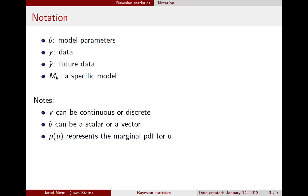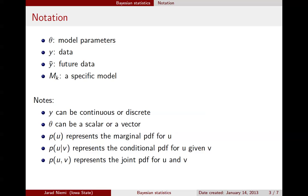We'll often be talking about density or mass functions, so I wanted to review the marginal, conditional, and joint probability density and mass functions. A lowercase p of argument u represents the marginal probability density function for u. p(u|v) represents the conditional probability density function for u given v. And p(u,v) represents the joint probability density function for u and v. This could also refer to a probability mass function if u and/or v are discrete.